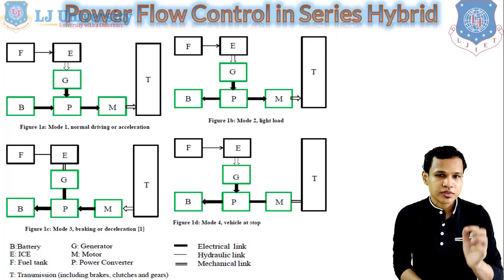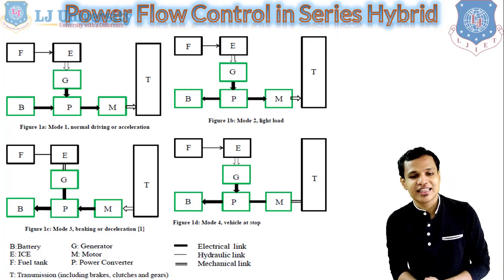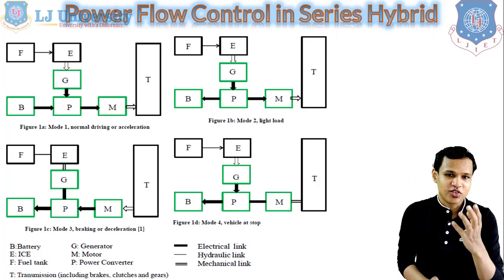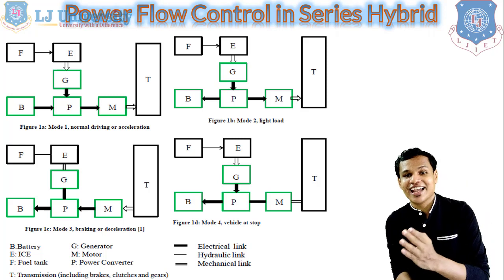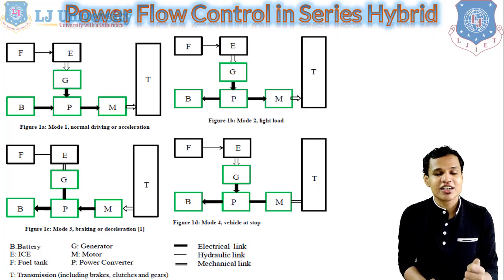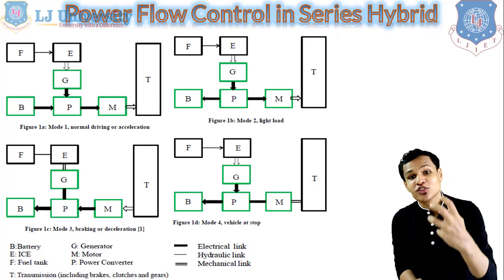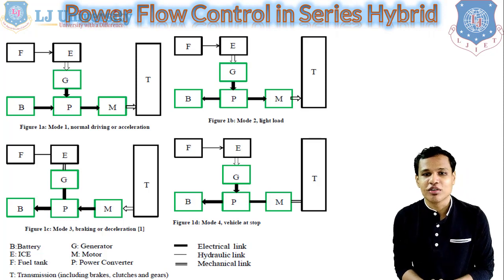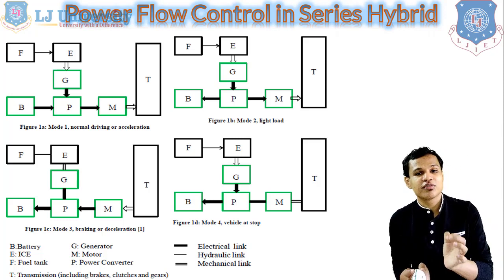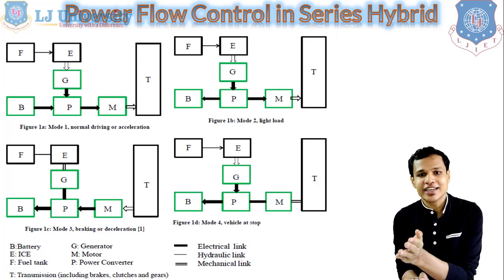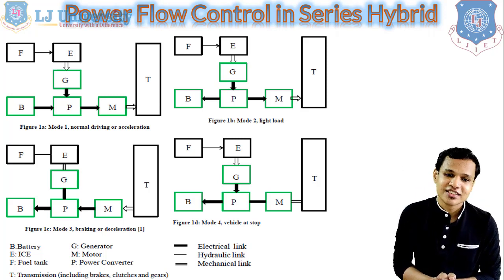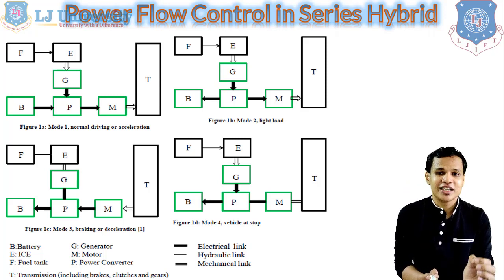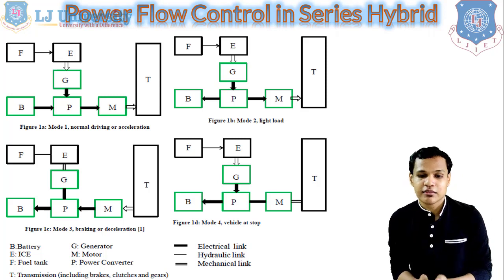In mode 1, shown in figure 1A, it is for normal driving or acceleration. During normal driving or acceleration, the power from the battery and also from the engine will both be directly transmitted to the transmission system. All the arrows in figure 1A are pointed towards the transmission system, showing how power is transmitted during acceleration in the series hybrid vehicle.